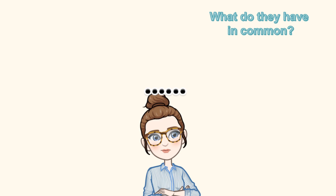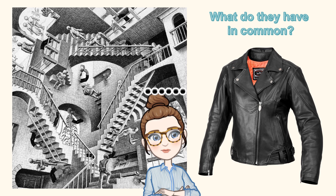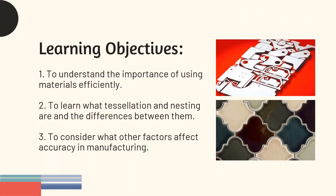Hey guys, welcome back. I have a couple of pictures to start us off for you to have a little think about — what do you reckon these two pictures might have in common? All will be revealed very shortly. Today we are going to understand the importance of using materials efficiently, learn what tessellation and nesting are and the differences between them, and consider other factors affecting accuracy in manufacturing.